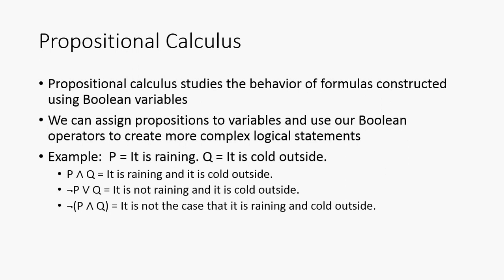So, for example, if we let P equal it is raining and Q equal it is cold outside, then P and Q would represent it is raining and it is cold outside. Or, if we can also do negation of P or Q. That's going to mean that it's not raining and it's cold outside.